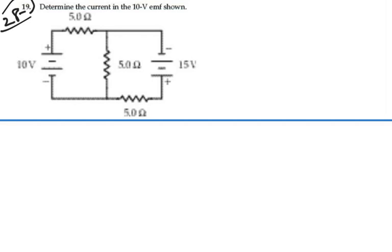Let's mark our batteries first. We have a 10 volt battery here, long and short bars positive negative. 15 volt battery over here, positive negative. Sounds good.